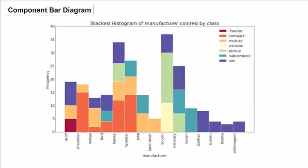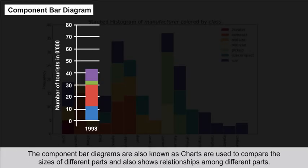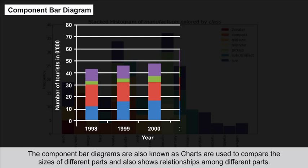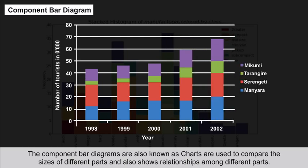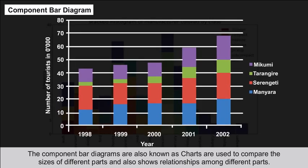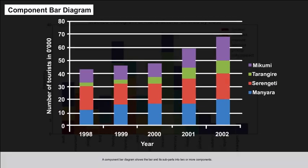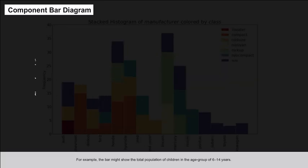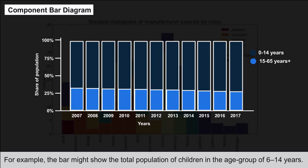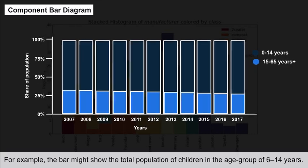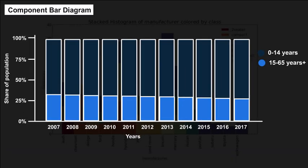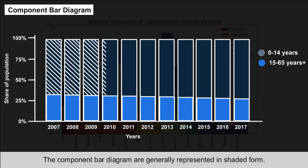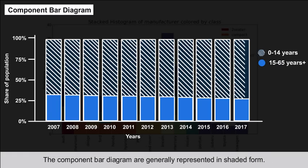Component Bar Diagram: Component bar diagrams, also known as charts, are used to compare the sizes of different parts and show relationships among them. A component bar diagram shows the bar divided into two or more sub-components. For example, a bar might show the total population of children in the age group of 6 to 14 years. These diagrams are generally represented in shaded form.